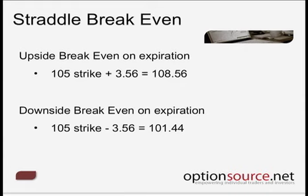We have to recognize that because we've purchased both the call and the put option, the cost of this transaction is going to be that much more than if we simply had a directional bias and bought either the call or the put separately. In order to determine the break-even point on expiration, we take the entire value of that position and add it to the 105 strike of the call, which equates to 108.56. We also subtract it from the 105 strike of the put to determine our downside break-even, which is 101.44. This suggests that if we hold this position until expiration, we need the pair value to be above 108.56 or below 101.44 to make money.